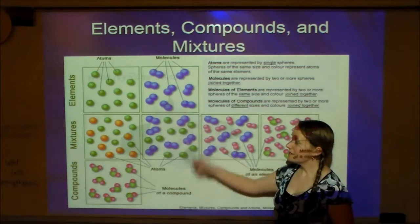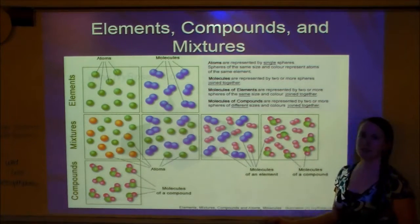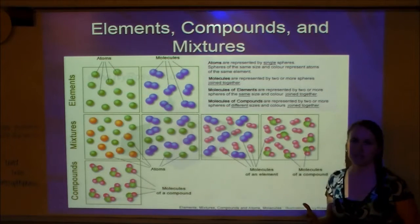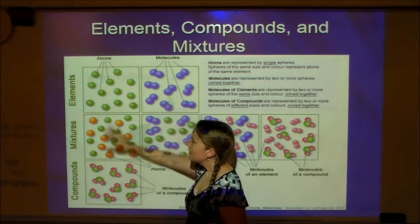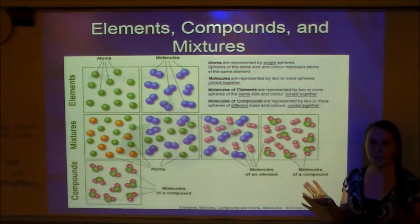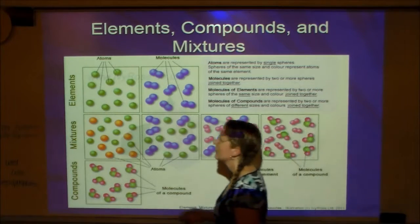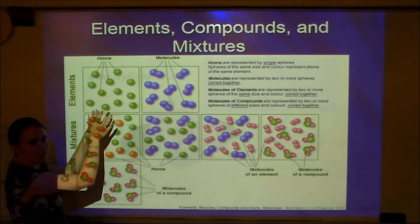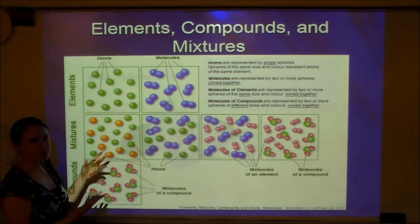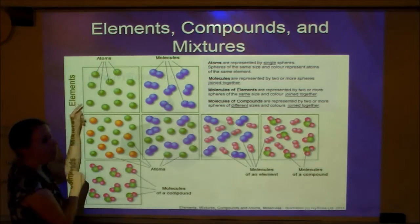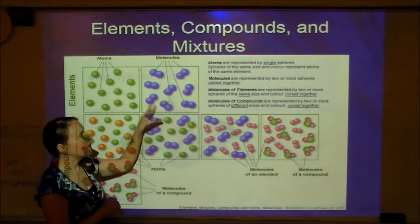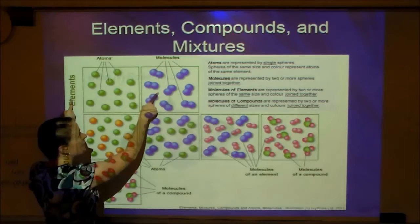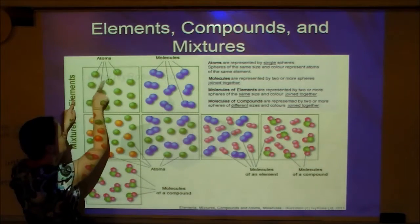Let's look at a picture showing the difference between elements, compounds, and mixtures. In this chart, atom identity is based on color — same color means same type of atom. For elements, only one type of atom exists. If all particles are the same color and each stands alone, it's an element made of atoms. If they're all the same color but paired up and bonded together, they're molecules — but it's still an element made of molecules.